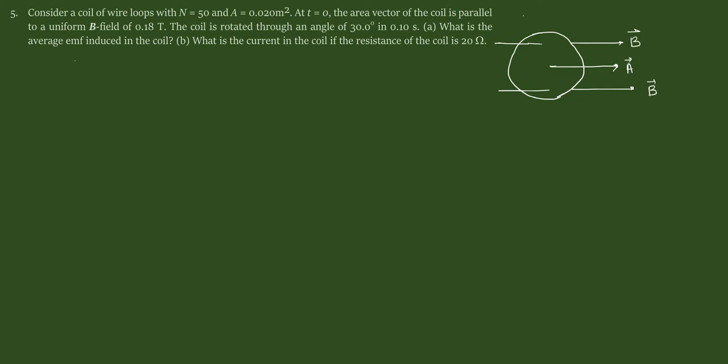So that means that at t equals 0 time the angle between area vector and magnetic field is 0 degrees. That's theta equals 0 degrees.